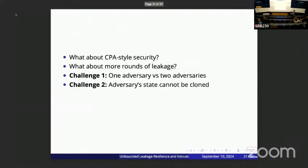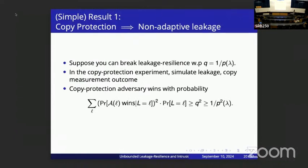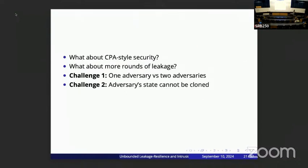But what about CPA-style security, where we require that you learn no information at all about the encrypted message — not just unpredictability? And this was only one round of non-adaptive leakage, where the measurement circuit doesn't depend on the public key. What about more rounds of leakage? In the original definition, we have any polynomial number of rounds of adaptive measurements.